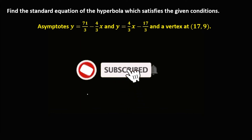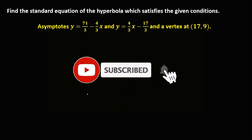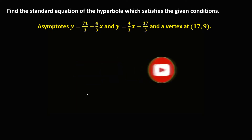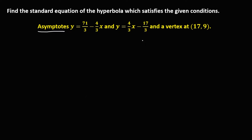Welcome to MathStoria. For this problem, we need to find the standard equation of the hyperbola which satisfies the given conditions. We have the equation of asymptotes and the vertex. Since in a hyperbola, the point of intersection of the asymptotes is the center.